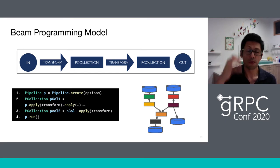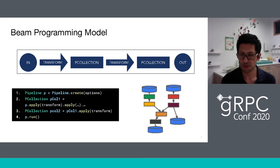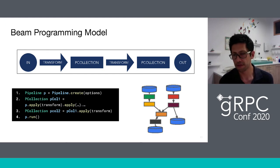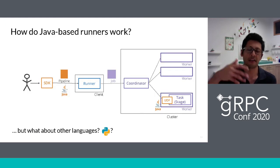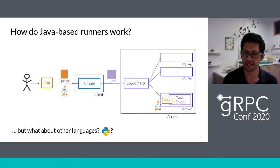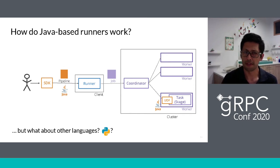How does this work in Beam until recently? For Java-to-Java translation, users write their program using the Beam SDK — this is full Java. Then in Beam, we translate from the Beam functions into the target functions. If you're familiar with Spark, we produce an RDD and call RDD.map to map the function. All of this is straightforward because the functions are similar across systems — we're mostly wrapping and unwrapping the functions.